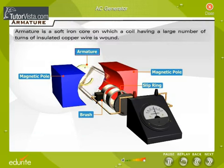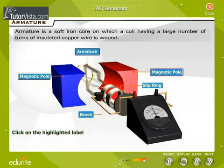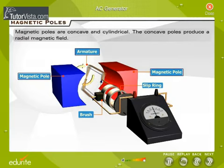Armature is a soft iron core on which a coil having a large number of turns of insulated copper wire is wound. Magnetic poles are concave and cylindrical. The concave poles produce a radial magnetic field.